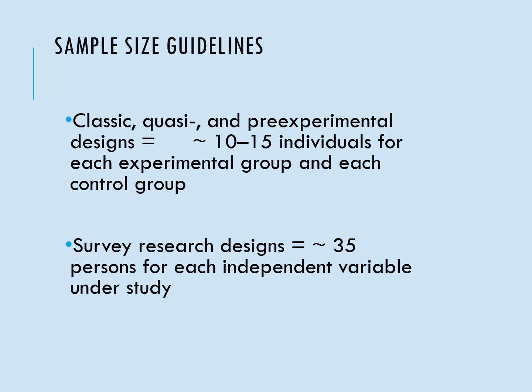We want to look at about 35 people for each independent variable under study. So if we have 10 independent variables, we want to look at about 350 people overall that we need to include in our study.